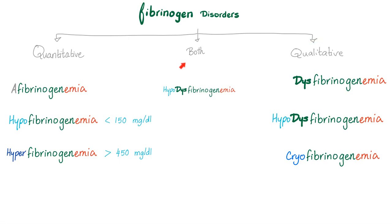Fibrinogen disorders could be quantitative, qualitative, or both. Quantitative: afibrinogenemia (fibrinogen is absent), hypofibrinogenemia (fibrinogen is low), or hyperfibrinogenemia (fibrinogen is high). Qualitative defect: dysfibrinogenemia — a problem in function. Hypodysfibrinogenemia is both a problem with number and function. Cryofibrinogenemia is abnormal fibrinogen at cold temperature — the fibrinogen precipitates in plasma at low temperature, and it's reversible when you reverse the temperature.